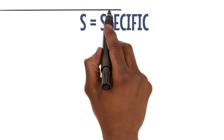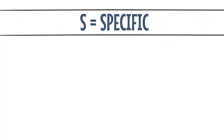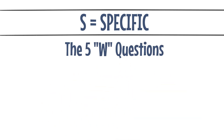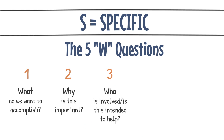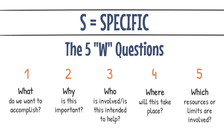First, the S — Specific. By getting specific, you will clearly define exactly what needs to be done. When creating a specific aim, try to answer the five W questions: What do we want to accomplish? Why is this important? Who is involved or who is this intended to help? Where will this take place? Which resources or limits are involved?